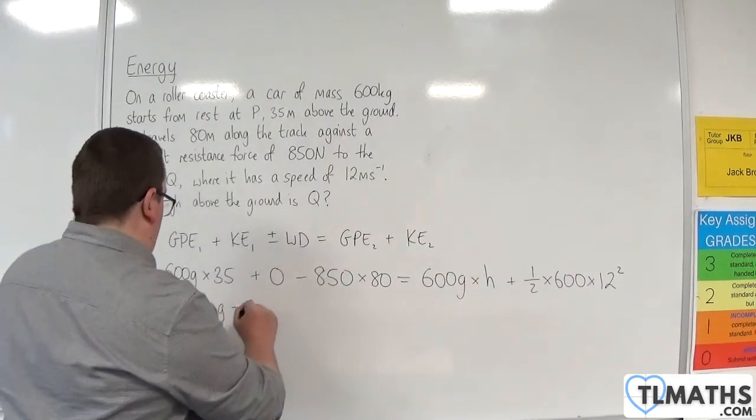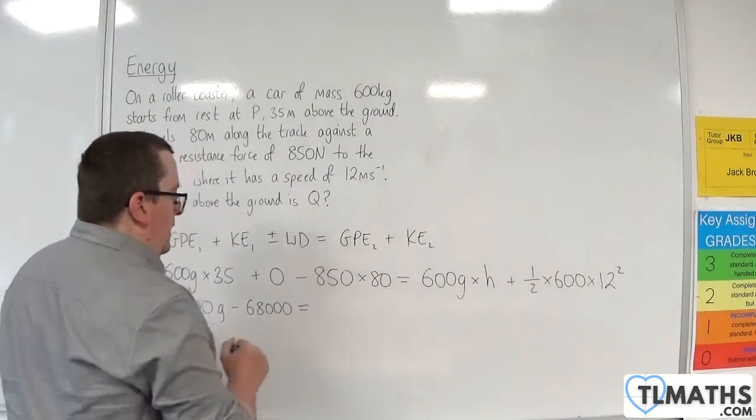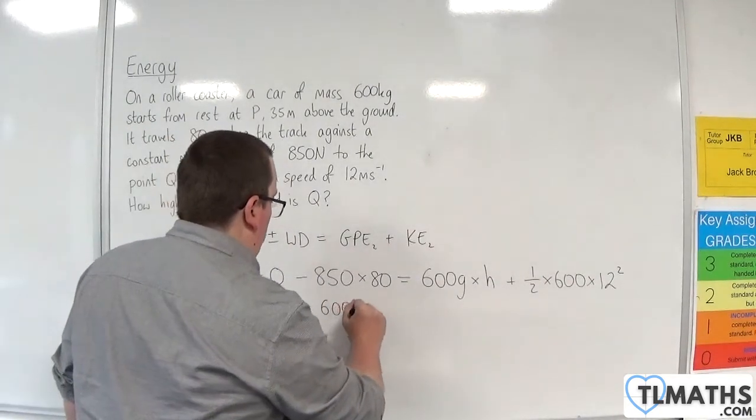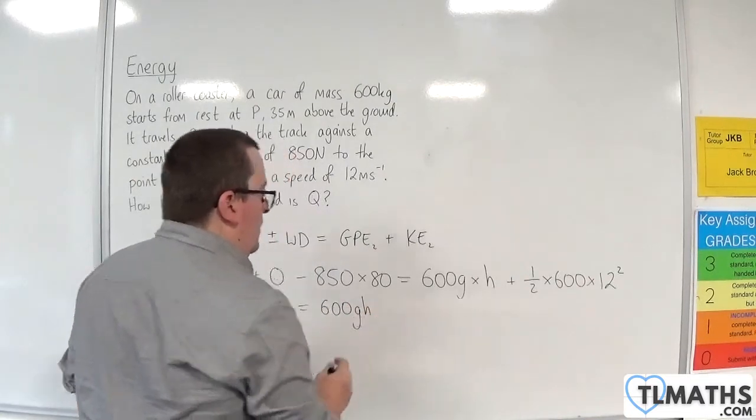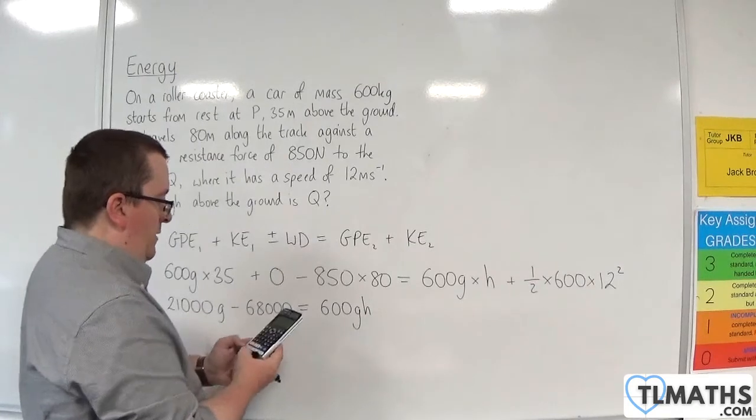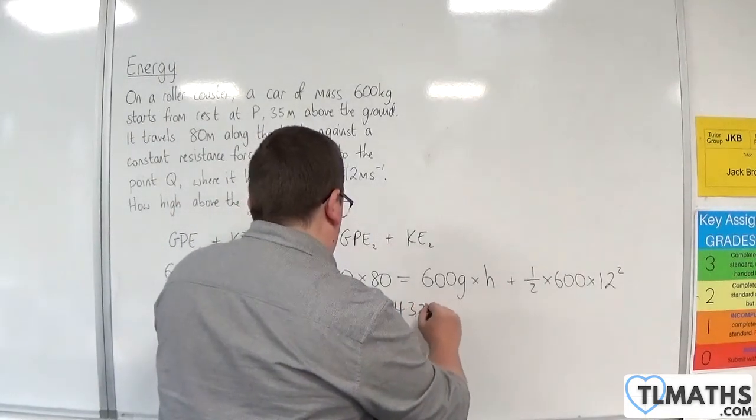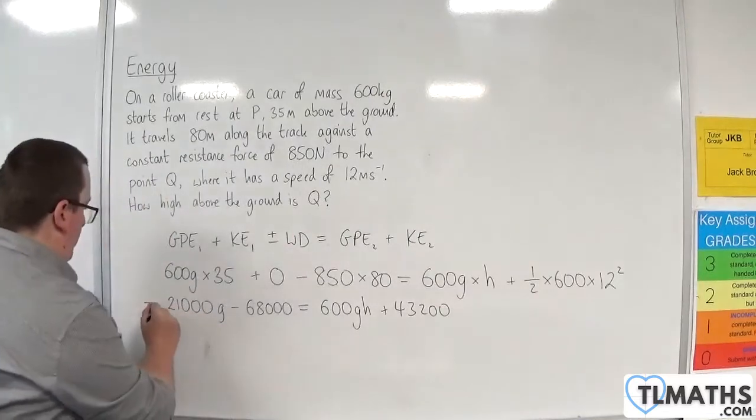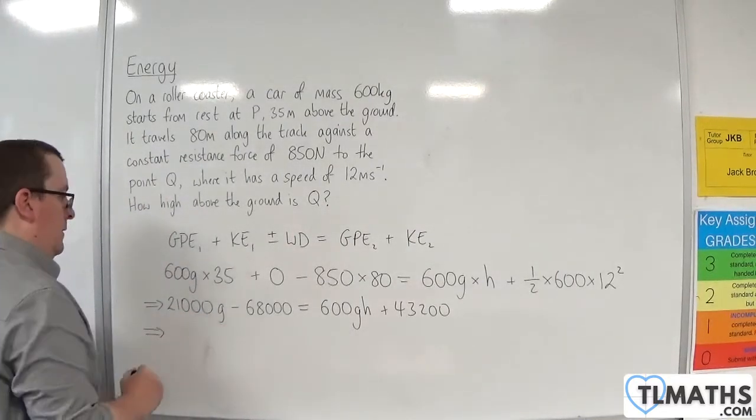So take away 68,000 is equal to 600 GH. And then we've got 0.5 times 600 times 12 squared. So plus 43,200.